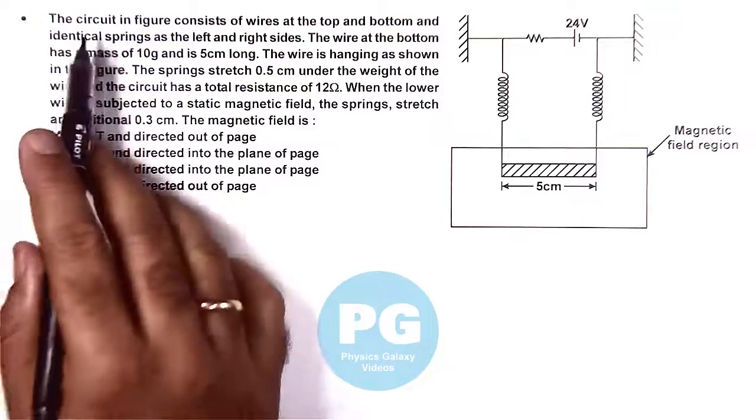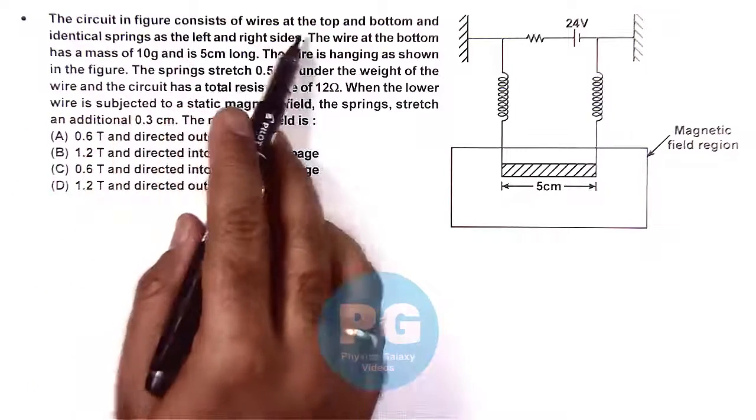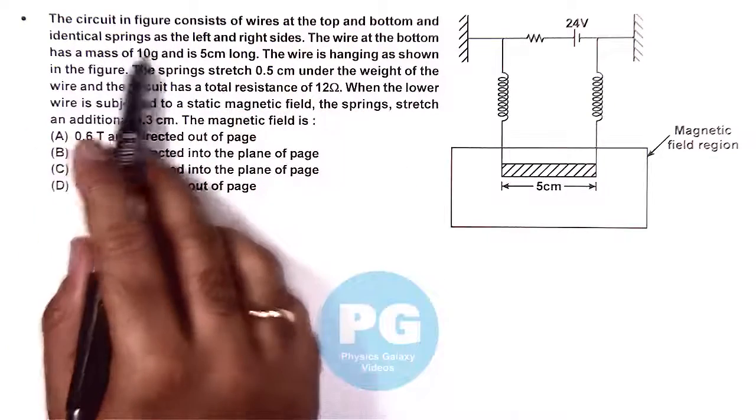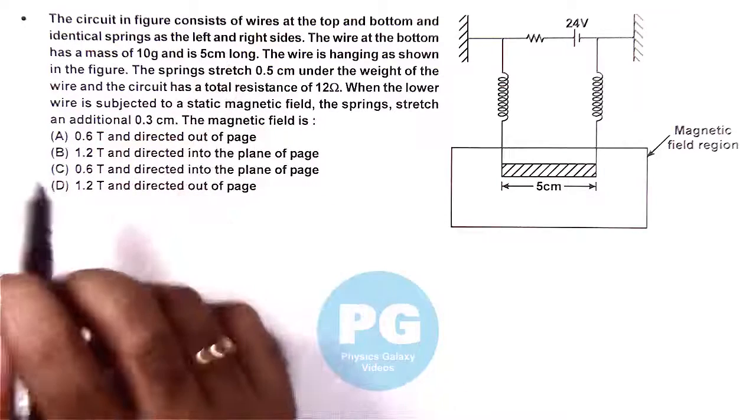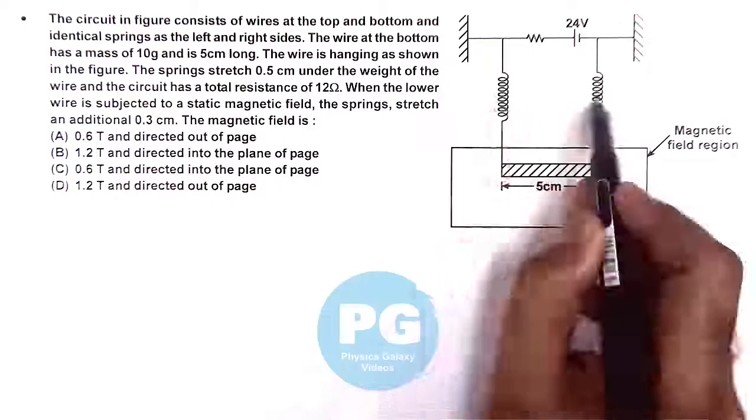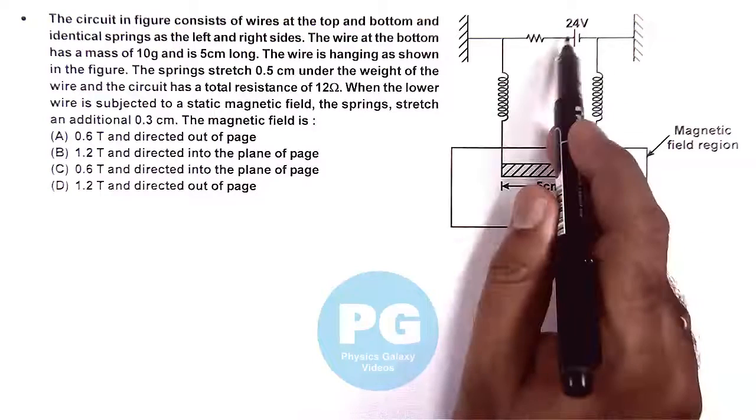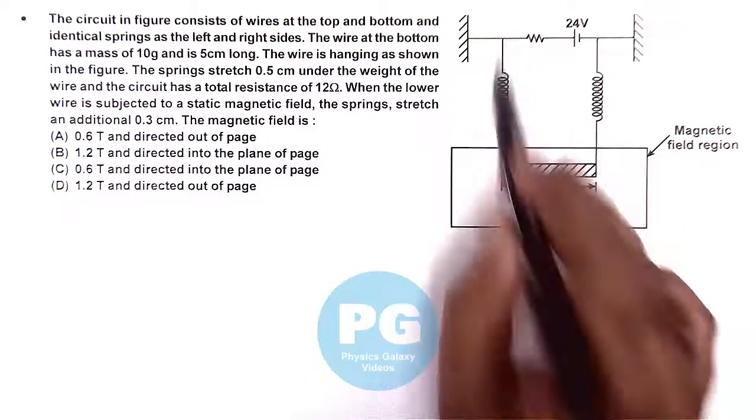In this question we are given that the circuit in the figure consists of wires at the top and bottom and identical springs as the left and right sides. Here the two springs are there to complete the circuit, and through the battery a current flows in this loop.